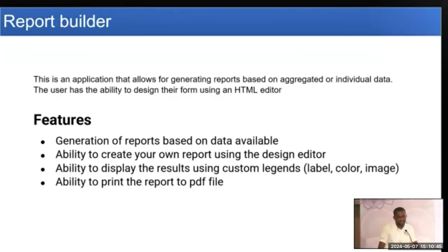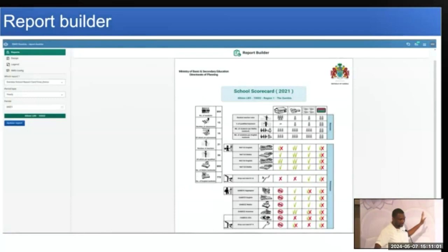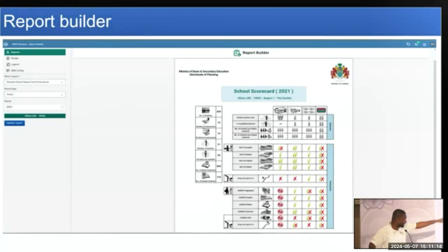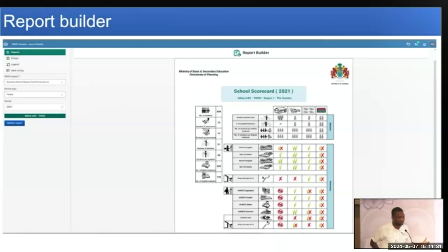You have the possibility to create your own design. The report builder is an app where you can see the report and print it in PDF. In the design part, you can actually copy a Word document and paste it into the design module, then populate it with data. You'll see there are symbols like a green symbol or a cross — those are images representing values. We created the app so that you can define ranges: from this range to this range is this icon, and from this range to this range of values, this is the color you'll have.